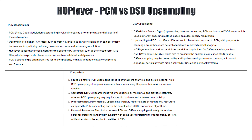Based on processing requirements, DSD upsampling is typically more power hungry and requires more computational resources, so you need a powerful PC and GPU to use most of the filters from the list. The choice between PCM and DSD will depend on personal preference and system synergy. Some people prefer PCM for its detailed presentation, while others prefer the DSD sound, which is smoother and more analog-like.